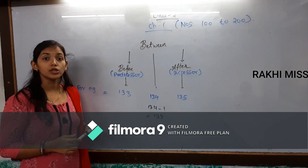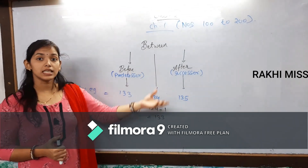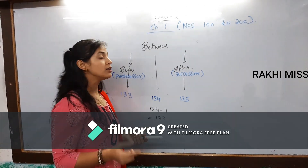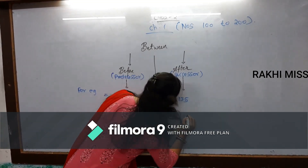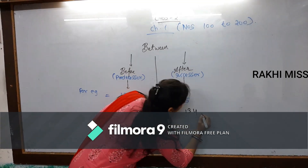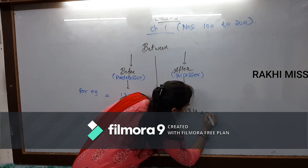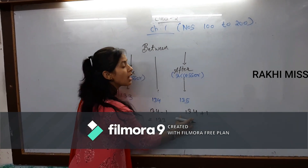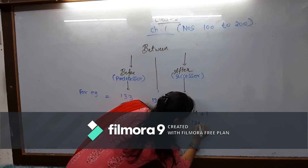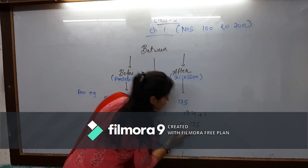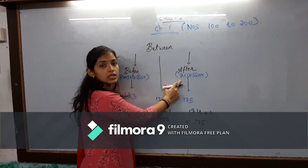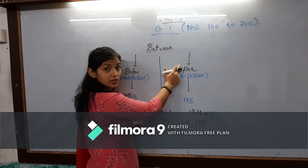Now we are going to learn successor. In successor, we add one more. For example, we have 134. Then we add one more — so 134 plus 1, it will count 135. So 135 is your successor. Successor means after.